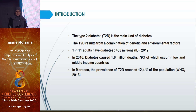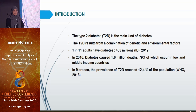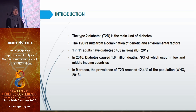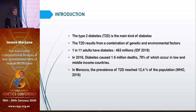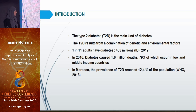As Professor Mutala mentioned, type 2 diabetes is the main form of all types of diabetes and results from a combination of genetic and environmental components. One in 11 adults has diabetes, approximately 463 million individuals, according to the International Diabetes Federation in 2019. In 2016, diabetes caused 1.6 million deaths, among which 80% occurred in low and middle-income countries, including Morocco, where the prevalence reaches 12.4% of the population. This is why we are interested in this gene in association with type 2 diabetes in Moroccans.